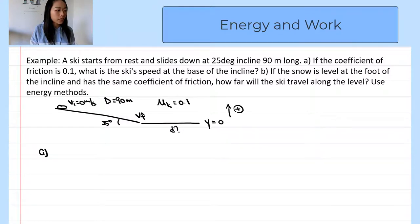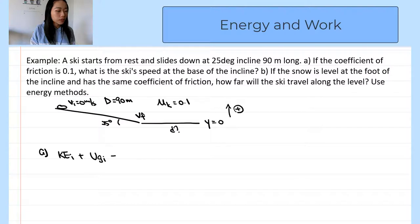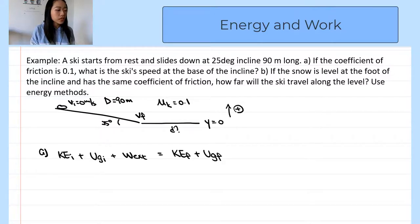For part A, there's friction, which means energy is not conserved. So we use the full energy equation: initial kinetic energy plus initial potential energy plus the work done equals the final kinetic energy plus the final gravitational potential energy. Initially the skier is not moving, so initial kinetic energy is zero. At the bottom of the incline, y equals zero, so the final gravitational potential energy is also zero.